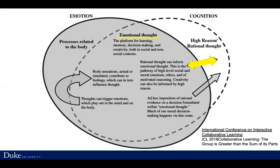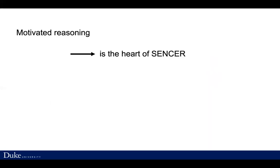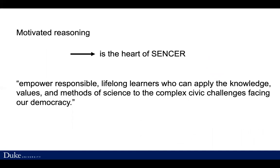I'm particularly interested in this arrow that shows the oscillation back and forth of how cognition affects emotion and emotion affects cognition. I think that's where all of us in CENSA really live — that rational thought can inform emotional thought. This is the pathway of high-level social and moral emotions, ethics, and motivated reasoning. Creativity can also be informed by high reason. If you look at the CENSA mission statement, it is to empower responsible lifelong learners who can apply the knowledge, values, and methods of science — that's the reasoning component — to the complex civic challenges facing our democracy — that's the motivating component.